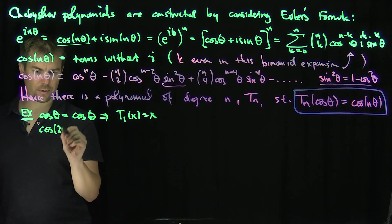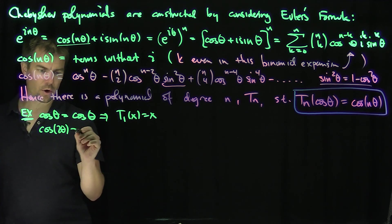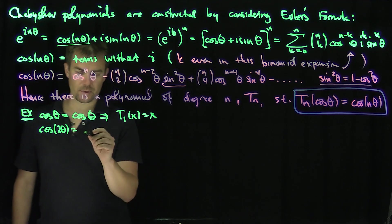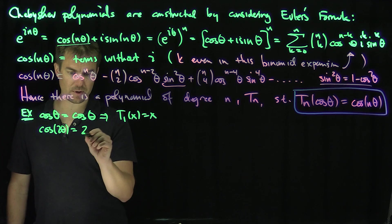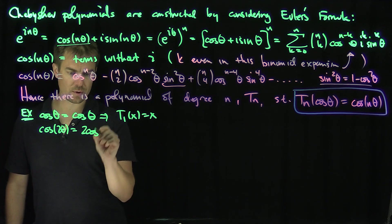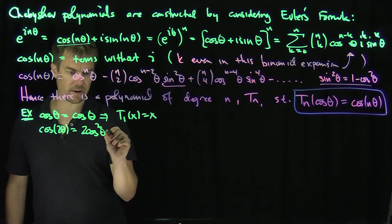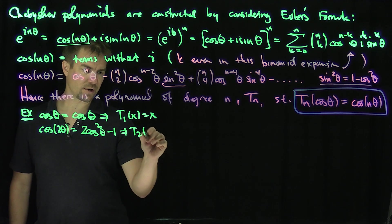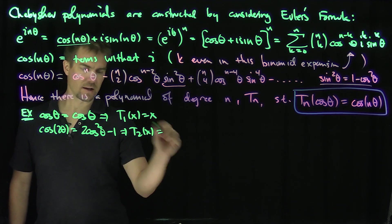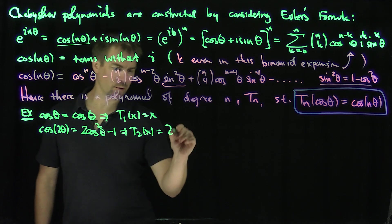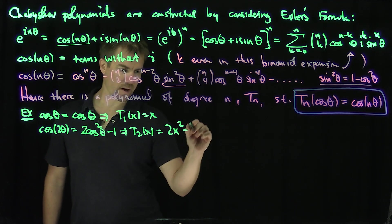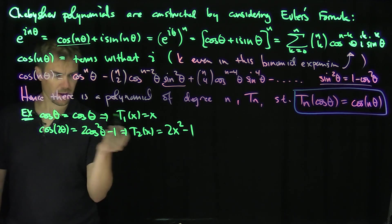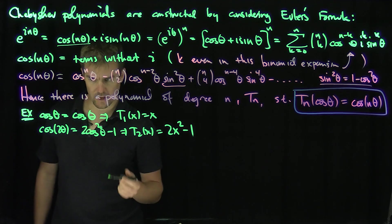For cosine(2·theta), by the double angle formula, cosine(2·theta) = 2·cosine^2(theta) - 1. So T_2(x) = 2x^2 - 1, which is indeed a polynomial in cosine.